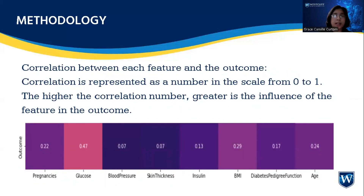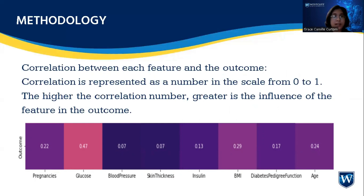Then we correlate between each of the features and the outcome. Using a heat map correlation, we use a scale of 0 to 1, where the higher the correlation of the feature, the greater its influence on the outcome, which is diabetes. From here we can derive that a higher glucose level, a larger BMI, and older age result in a higher probability of a diabetes diagnosis.